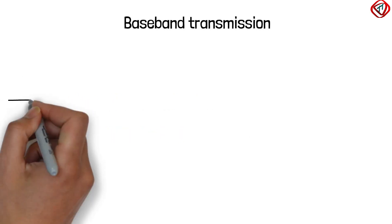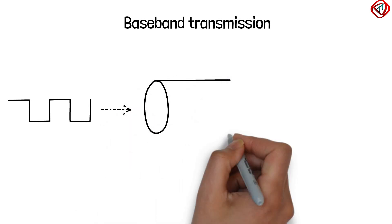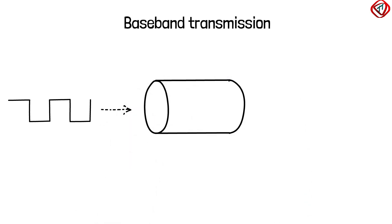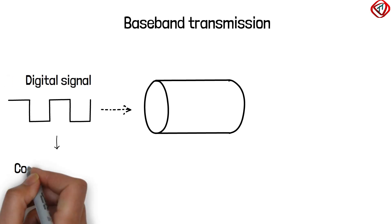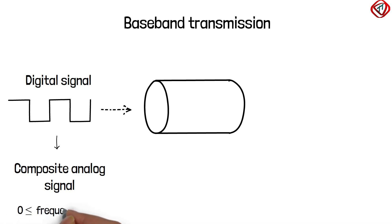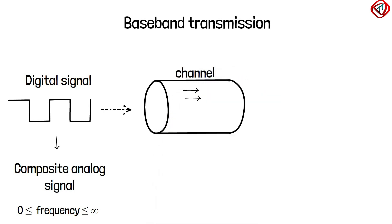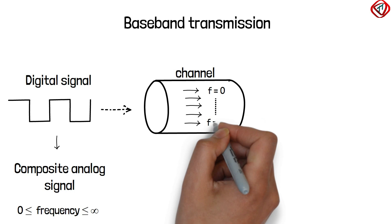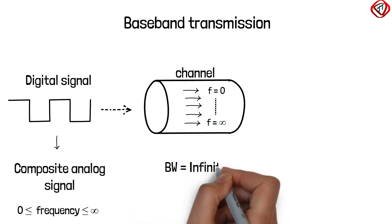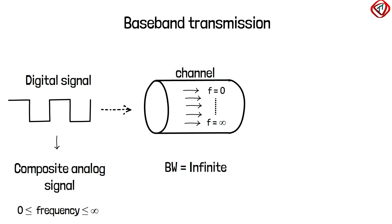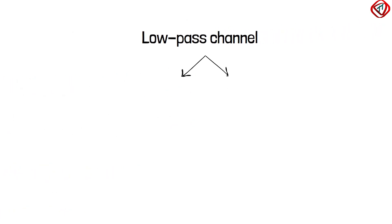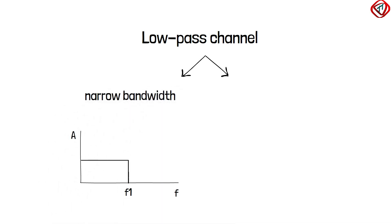In baseband transmission, the digital signal is transmitted via a channel or medium without changing it to an analog signal. We know that a digital signal is a composite analog signal with frequencies ranging from 0 to infinity. So the channel used for baseband transmission should allow frequencies starting from 0 to infinity — that is, it should have infinite bandwidth. However, a channel with infinite bandwidth does not exist, but we can get close to it by using wide bandwidth channels. A low-pass channel is the one whose bandwidth starts from 0. Let us consider two low-pass channels: one with narrow bandwidth and the other with wide bandwidth.